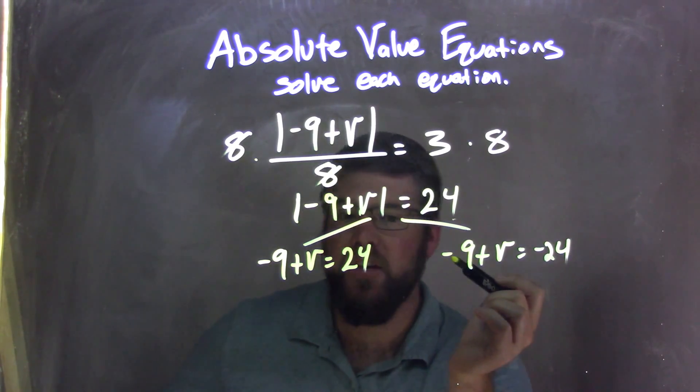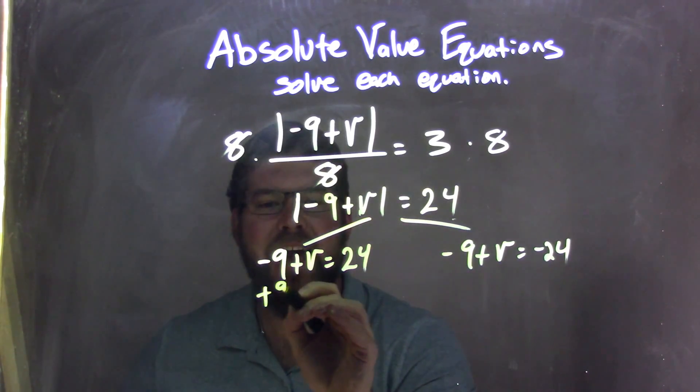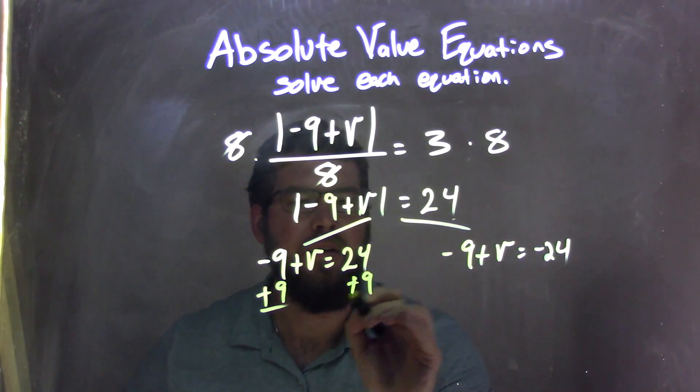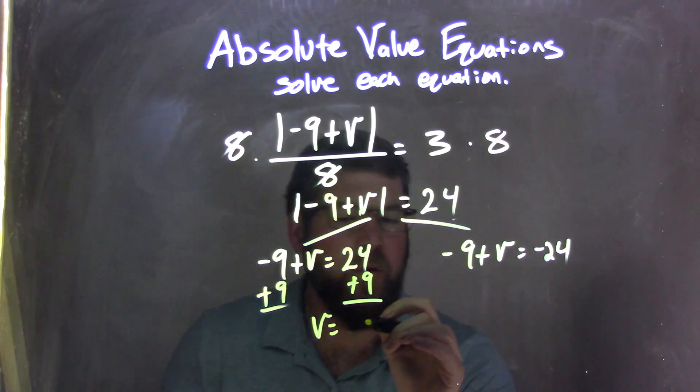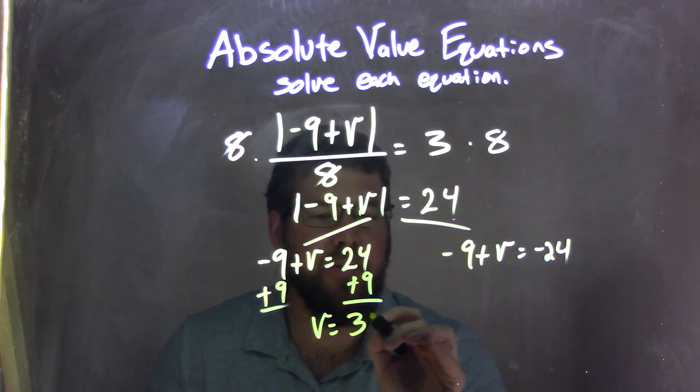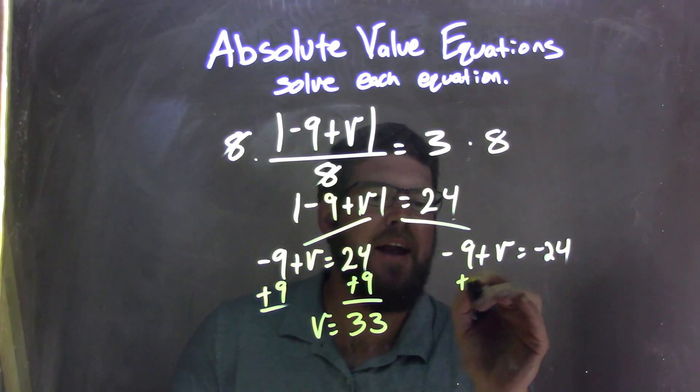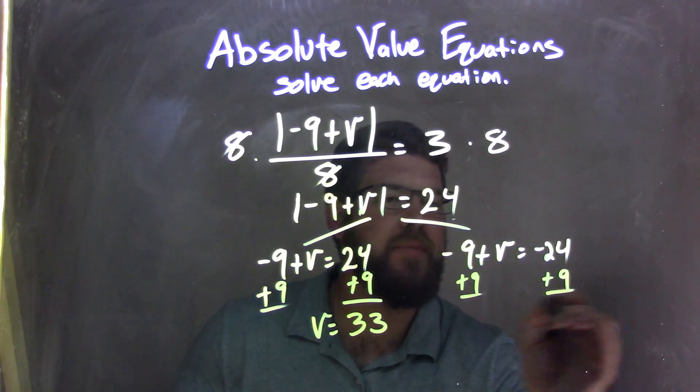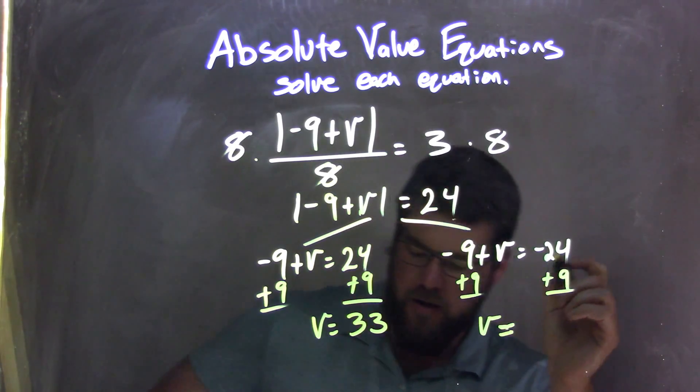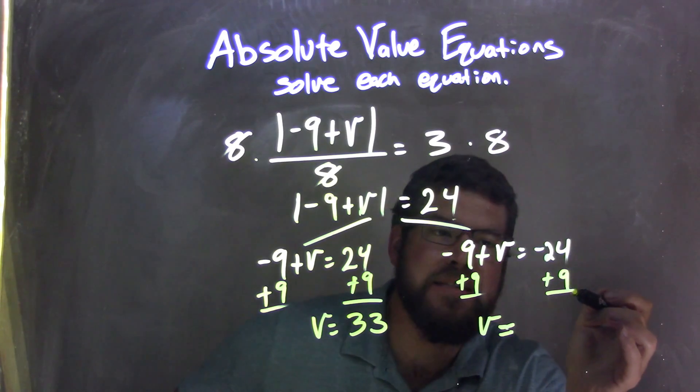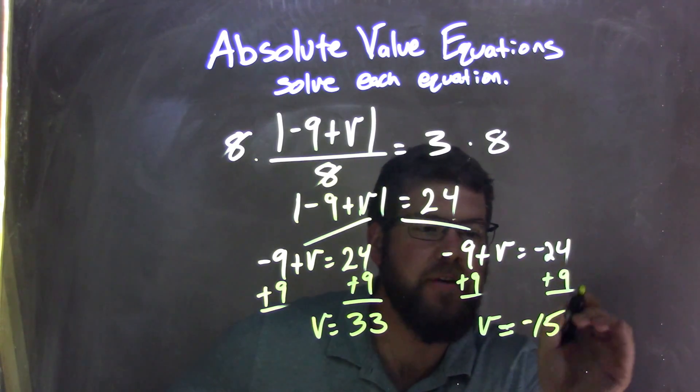I solve each one individually. I have to add 9 to both sides of the equation, leaving me with V equals 24 plus 9, which is 33. And here, I add 9 to both sides as well, leaving me with V equals—and this one's tricky—negative 24 plus 9 is negative 15.